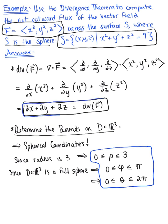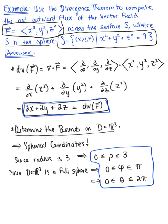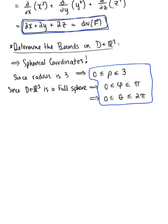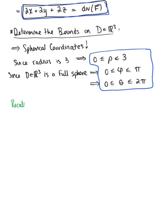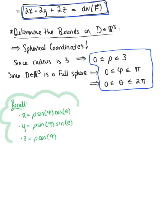Looking back at our divergence, we need to rewrite it in terms of rho, theta, and phi. As a friendly reminder, let's recall the conversion formulas for spherical coordinates: x equals rho times sine of phi times cosine of theta; y equals rho times sine of phi times sine of theta; and z equals rho times cosine of phi. We'll use these to parameterize the divergence.